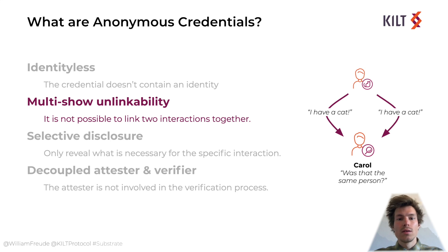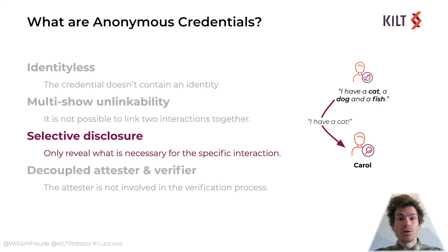With multi-show unlinkability, when you show your credential multiple times to the same or multiple different verifiers, they do not know they are talking to the same person. So you cannot be tracked over different verification sessions. Next we have selective disclosure. If you have multiple attributes but do not want to show all of them, you can choose any subset for your presentation. For example, if you want to prove you have a valid driver's license but don't want to reveal your address, you just disclose everything but your address from the proof. This feature is crucial for privacy, as you want to minimize the attributes you publicly show to a verifier.